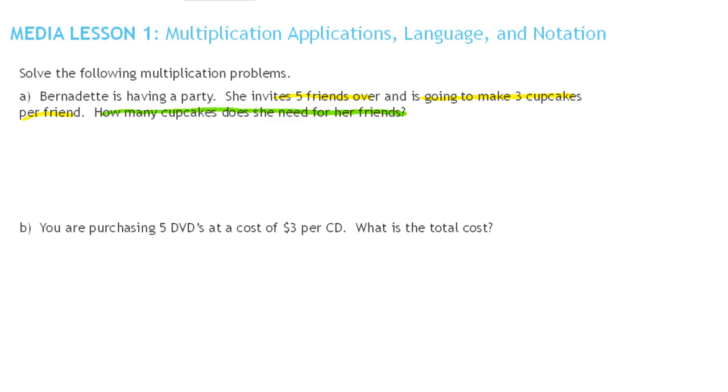So you may already know this answer but let's think about this. So there are five friends. Let's call them friend one, friend two, friend three, friend four, and friend five. So each of these five friends she's going to make three cupcakes and I'm just going to make those circles since I can't draw cupcakes. So there's three for the first friend, three for the second, the third, the fourth, and the fifth.